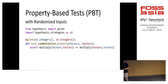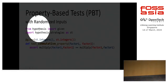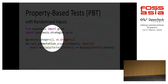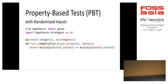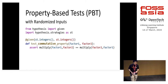That is using randomized inputs. In this example, I'm using Hypothesis to generate a random set of integers for the factors. Hypothesis gives us 100 samples at a time by default — 100 samples is the default size that Hypothesis provides.